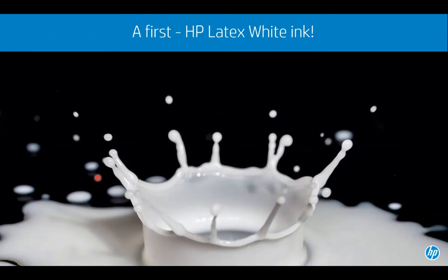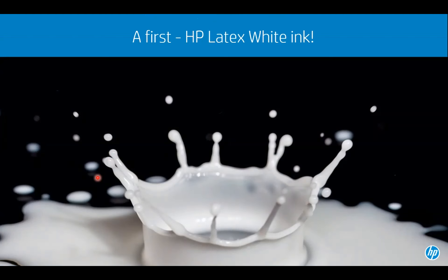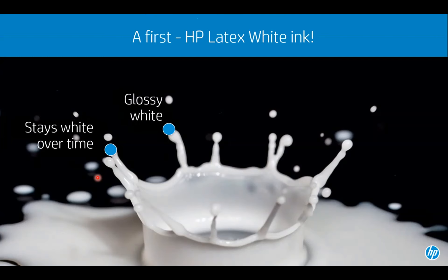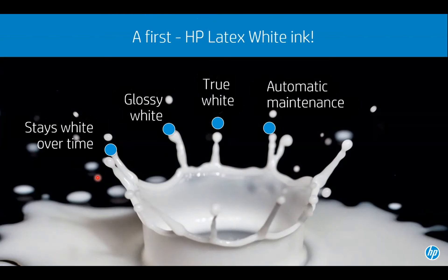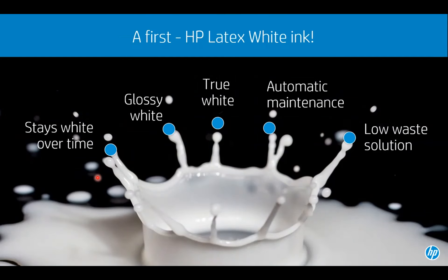HP latex white ink has no photo initiators in it like UV — that means it stays white over time. UV, once it gets exposed to indoor or outdoor lighting, starts turning yellow three to six months in. It's one of the glossiest whites in the industry. Our latex ink is a true white with no cast to it. Best of all, it's easy to maintain — Dan is going to cover how this works — and with relatively zero waste. We're going to go live and show you how the white system works.